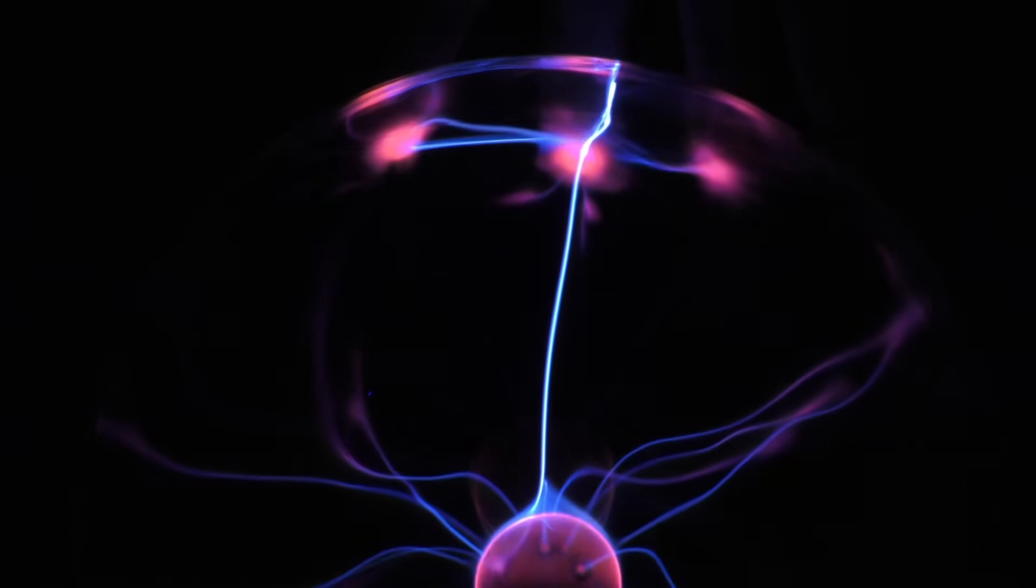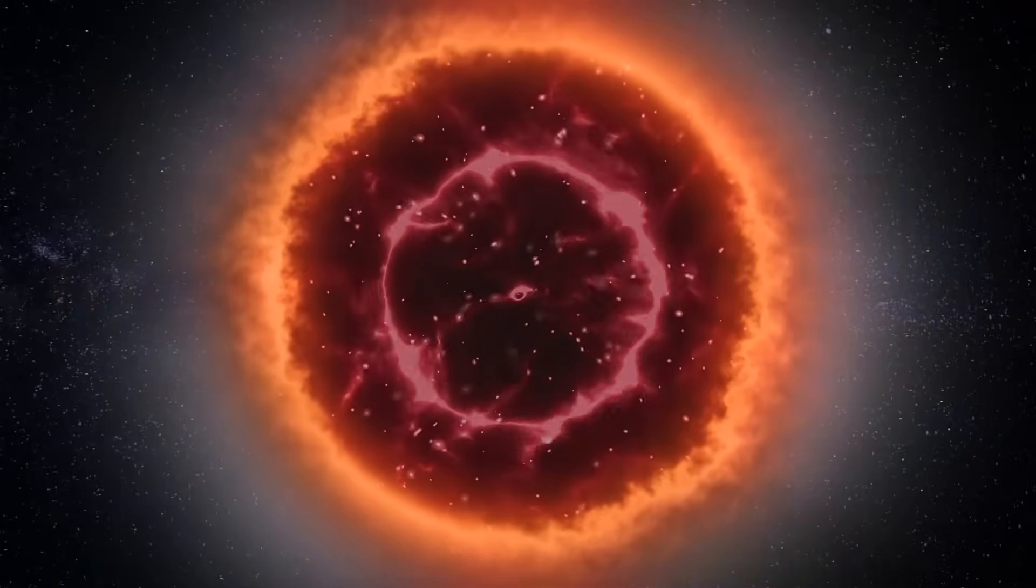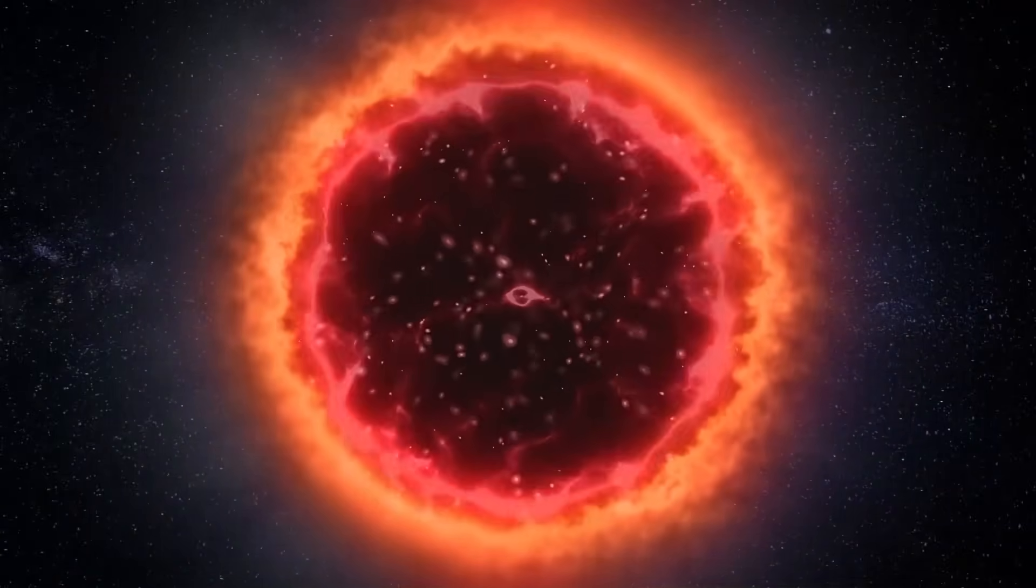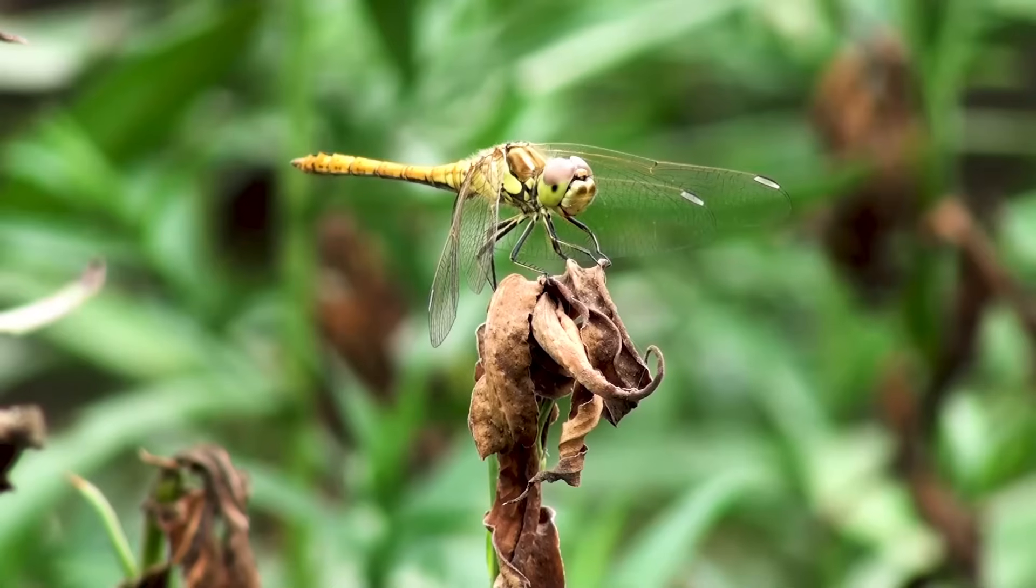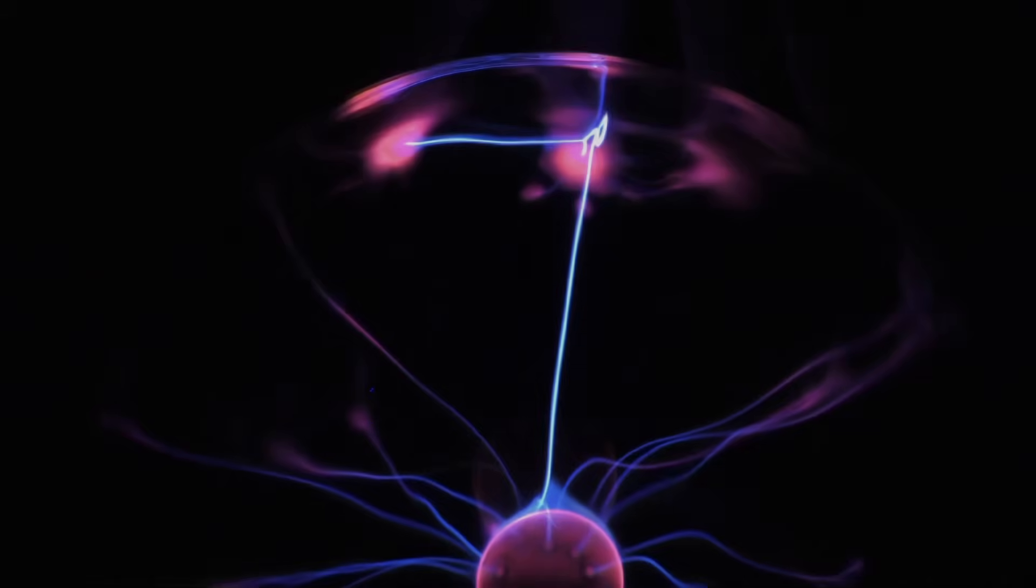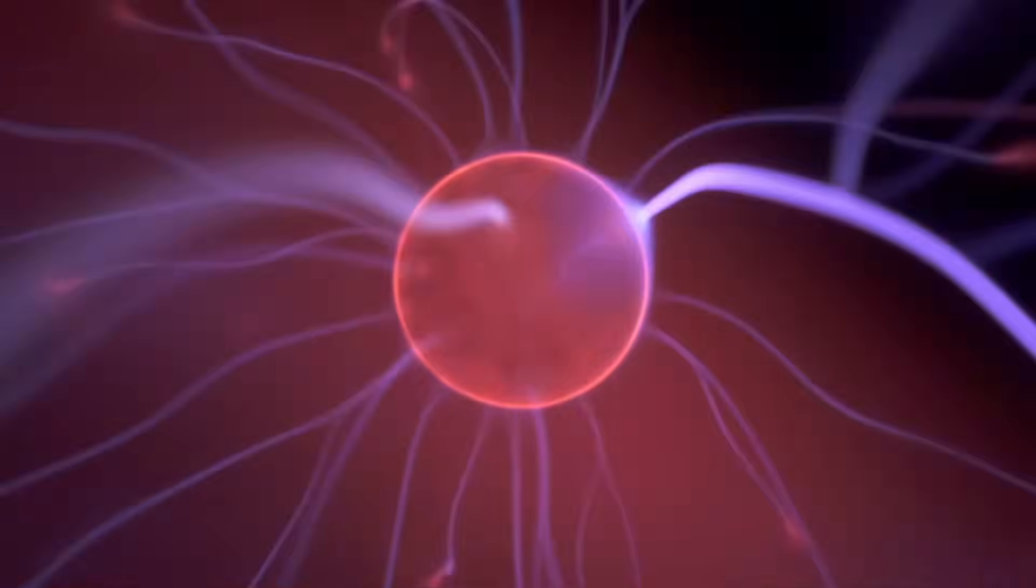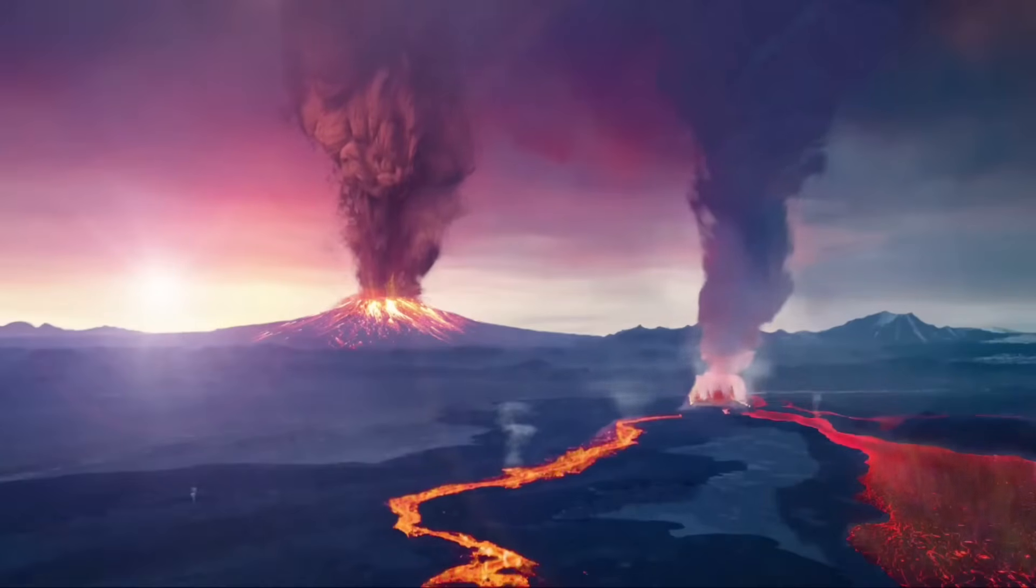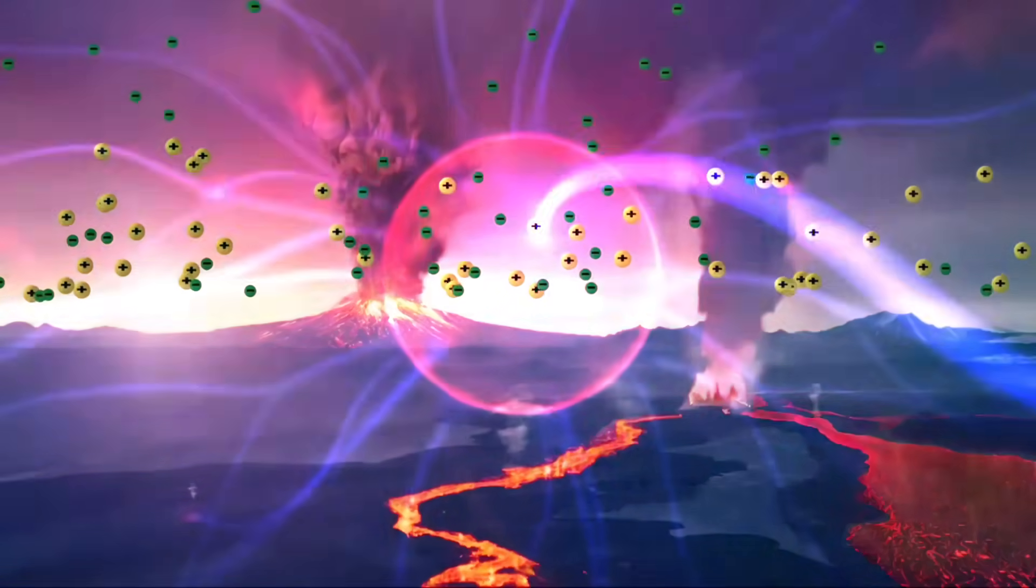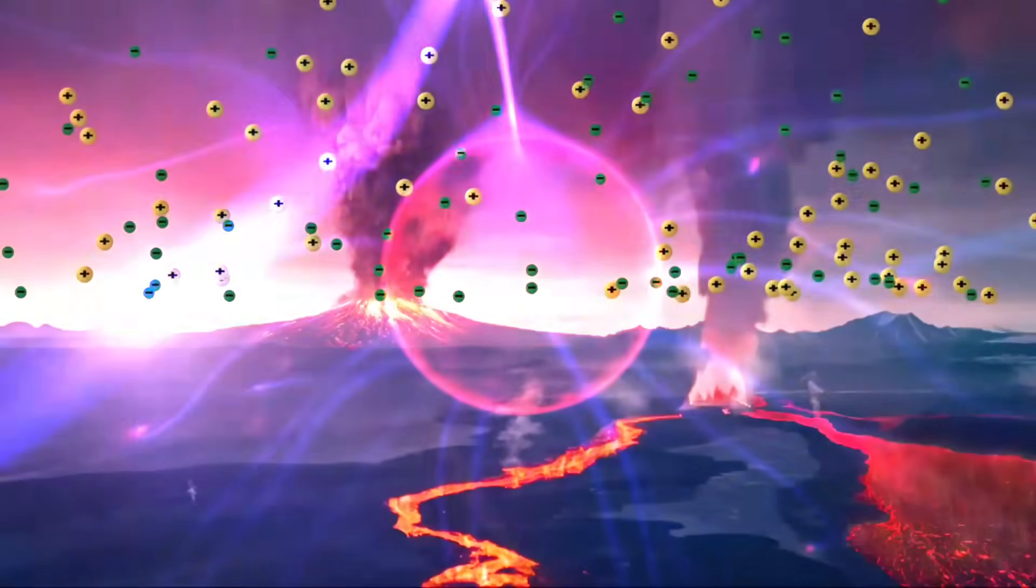In theoretical discussions about plasma-based life, scientists contemplate a biochemistry that operates at energy levels far beyond those encountered on Earth. Instead of relying on the complex organic molecules and water-based reactions that characterize carbon-based life, plasma-based organisms might utilize the charged particles and high-energy interactions of plasma as the basis for their biochemistry. Plasma is a high-energy state of matter, distinct from solids, liquids and gases. It consists of charged particles, such as ions and free electrons, making it an incredibly energetic and reactive environment.